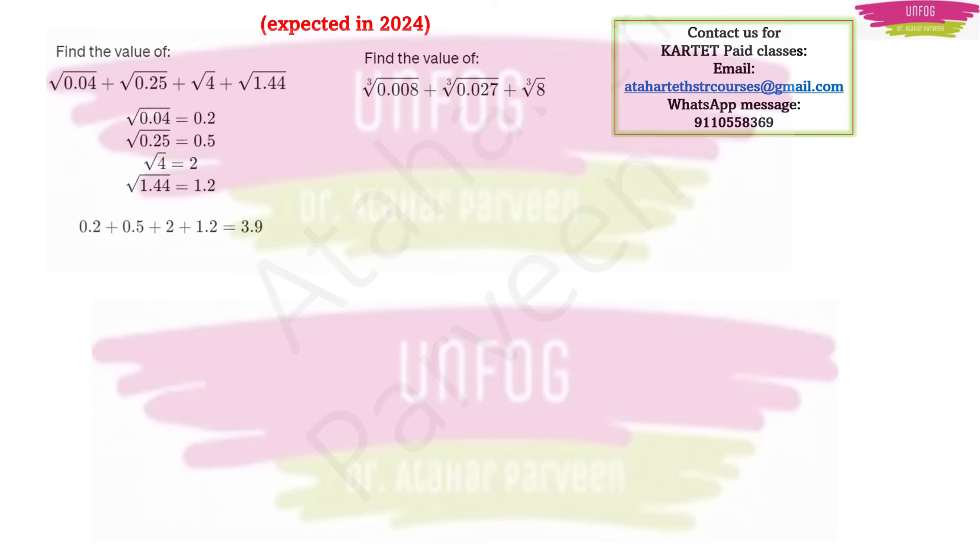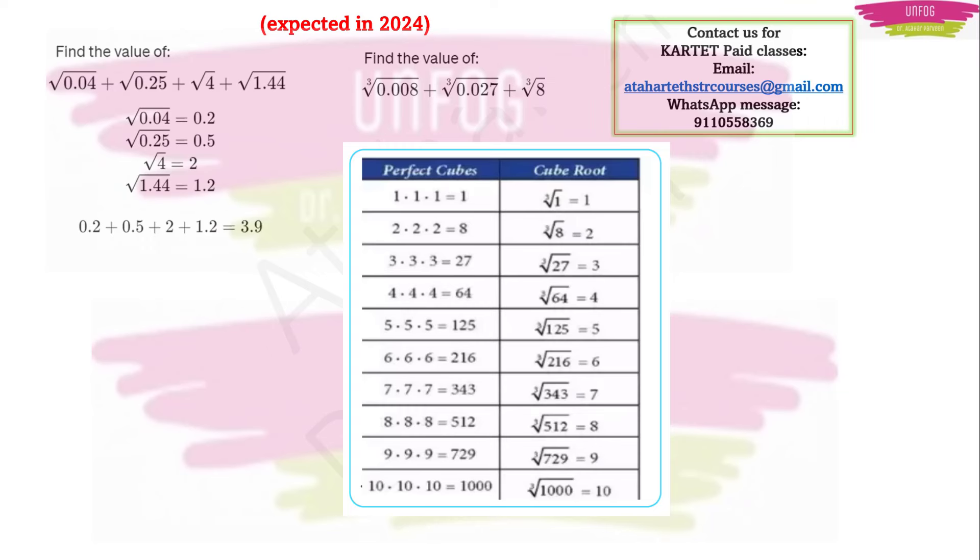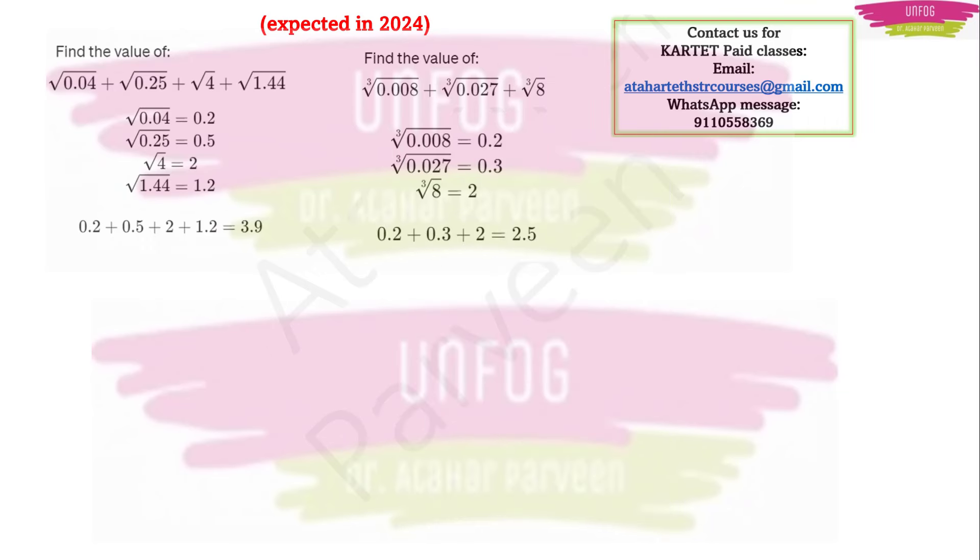Another expected question of similar type is find the value of cube root of 0.008 plus cube root of 0.027 plus cube root of 8. Here I would advise you to learn cube roots. Cube root of 8 is 2 and cube root of 27 is 3. When you have decimal numbers especially zeros, you have to remove those zeros when you remove the cube root. So 0.008 becomes 0.2, 0.027 will become 0.3, and the cube root of 8 is 2. You have 0.2, 0.3, and 2 added up you get 2.5.